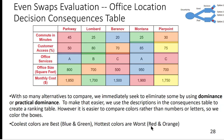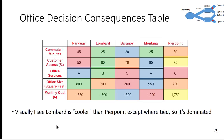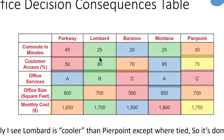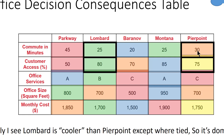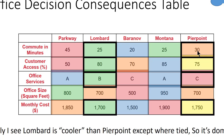The hottest colors — red and orange — are bad, and blue and green are the best. When we look at the colors, we can see that Lombard is cooler than PeerPoint. Comparing just these two: Lombard is better on commute, better on customer access, better on office services, and the monthly cost is better. They also have the same office size. So clearly Lombard is better than PeerPoint, and I can eliminate that alternative.